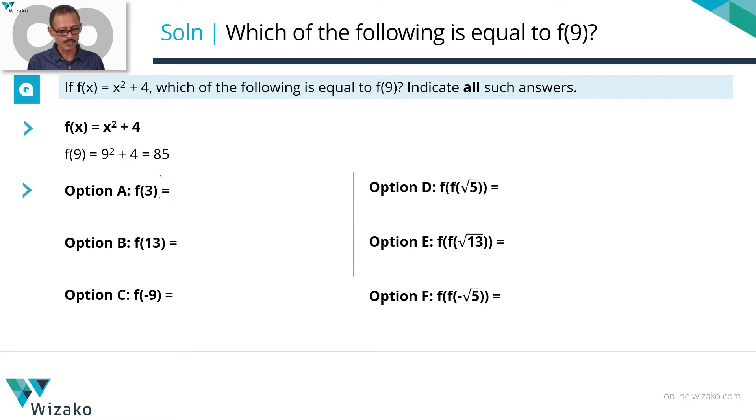Answer option A is f(3). So that's x squared plus 4 will be 3 squared plus 4 which is equal to 13 which is not the same as f(9). So answer option A is not one of our answers. Answer option B is f(13) which is 13 squared plus 4 which is 169 plus 4, 173, which is also not the answer.